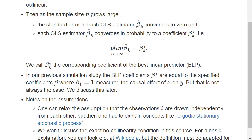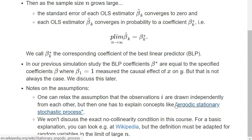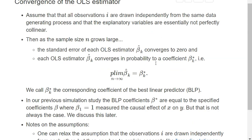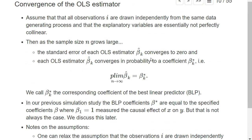Or one could also relax this assumption and say the observations are drawn from an ergodic stationary stochastic process, and they must satisfy some non-collinearity conditions. But I don't want to go into these technical details in this course. Let's say basically for all the examples we look at, the standard error of an OLS estimator converges to zero.